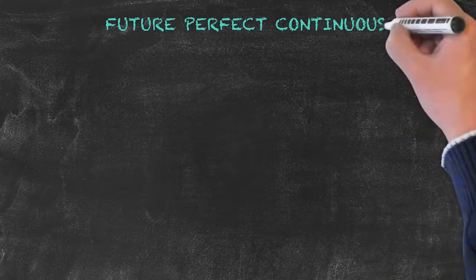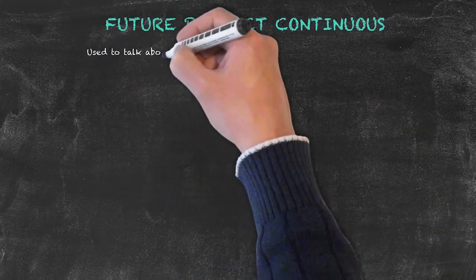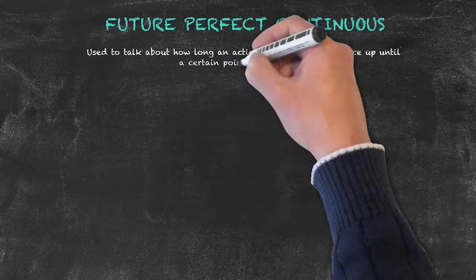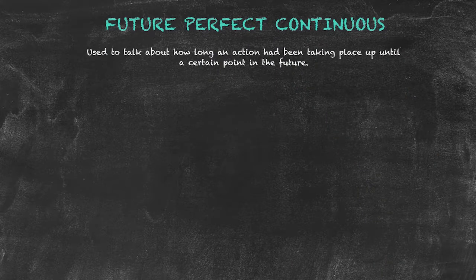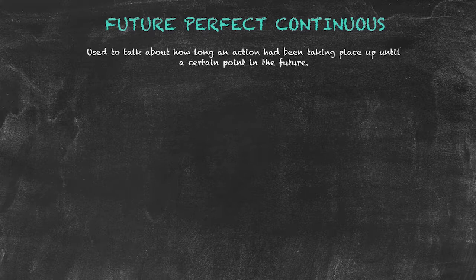Now let's take a look at the future perfect continuous tense. This tense is used to talk about how long an action had been taking place up until a certain point in the future. Our examples are for the positive sentence: